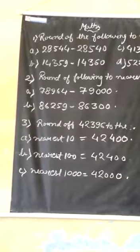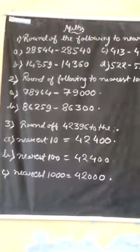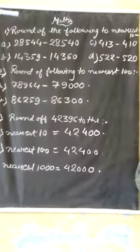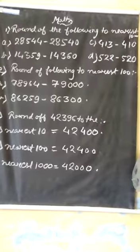Here, 86,259. We can pay 200 or 300, so our answer will be 86,300.